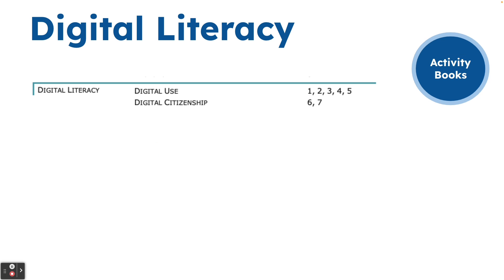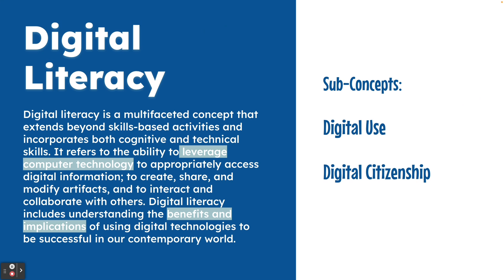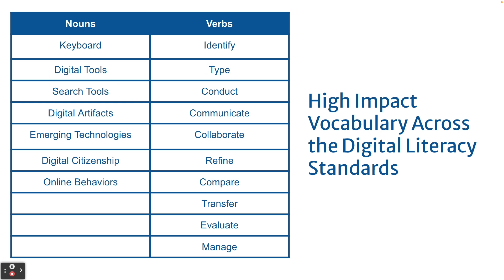Finally, digital literacy is broken down into digital use — which covers keyboarding and learning to use technology or ed tech software — and digital citizenship, which is about how you protect yourself online and who you are online. These sub-concepts talk about leveraging computer technology to access information, but also to create, share, and modify, to interact and collaborate, and to understand the benefits and implications in our world. High-impact nouns include keyboarding, digital artifacts, emerging technologies, digital citizenship, and online behavior. Verbs move from identify to evaluate and manage.